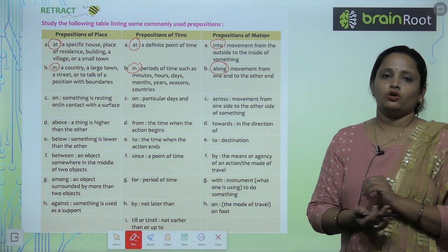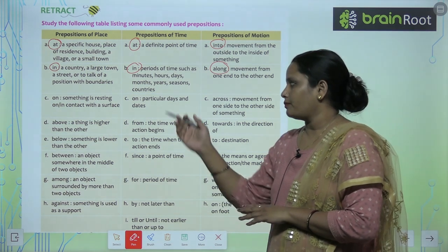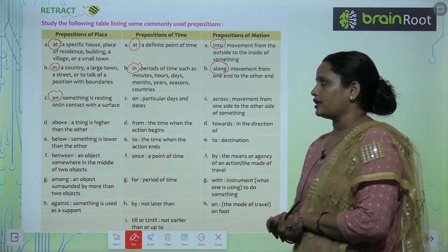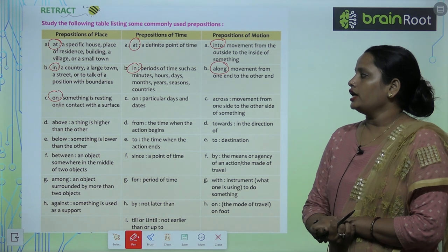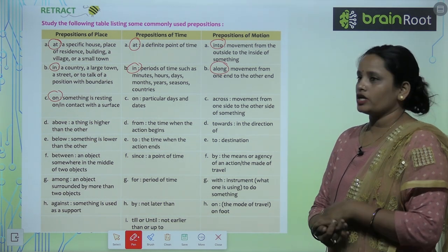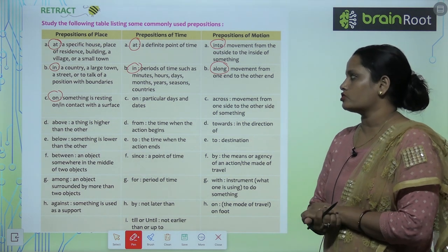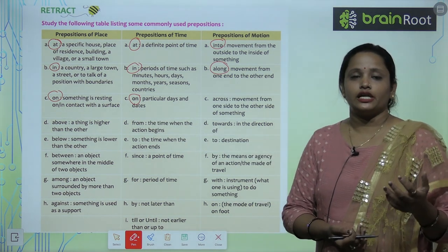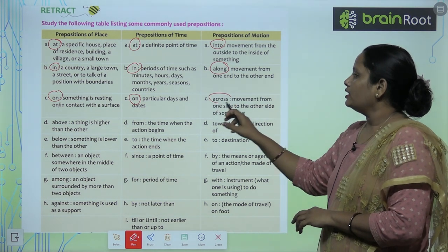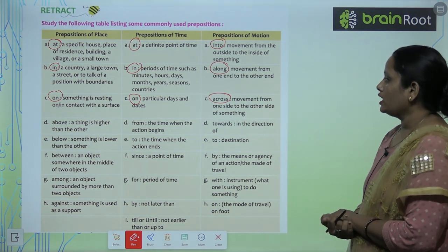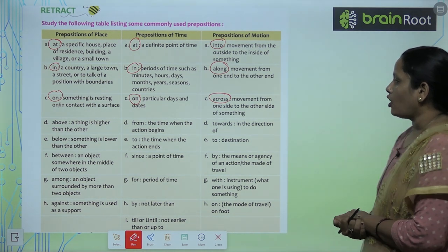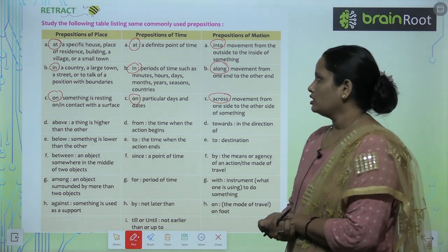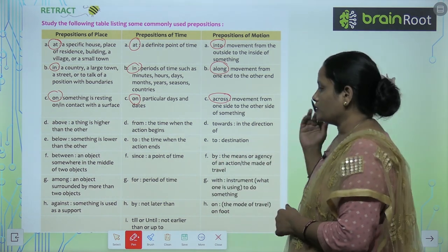Next comes 'on' — preposition of place — something resting on or in contact with a surface. 'On' is also used for a particular day and dates. 'Across' indicates movement from one side to the other side of something. Along means kisi ke saath jaana; across means kisi ke kinaare jaana.